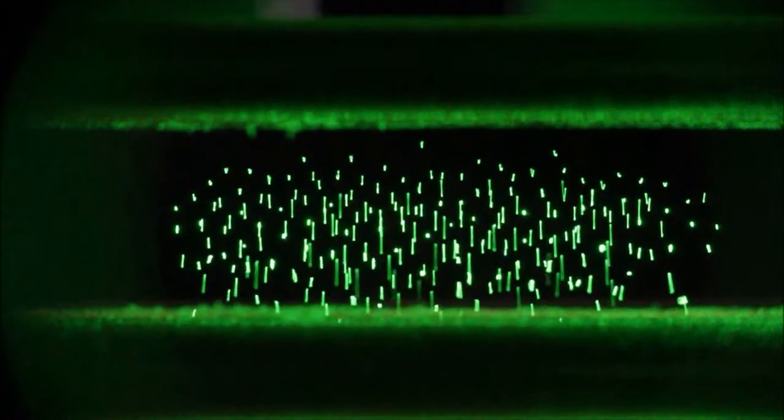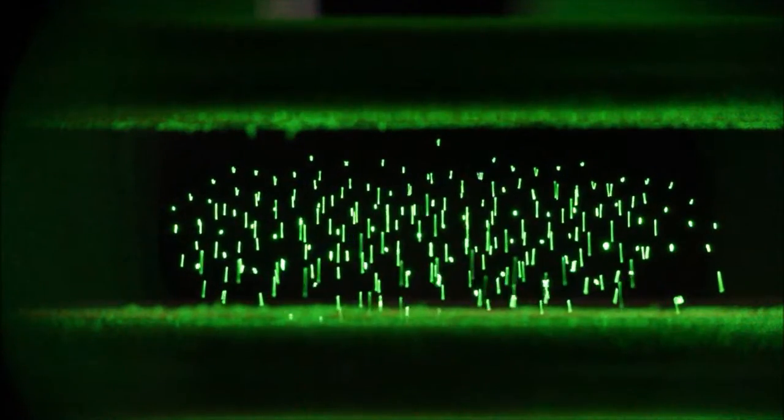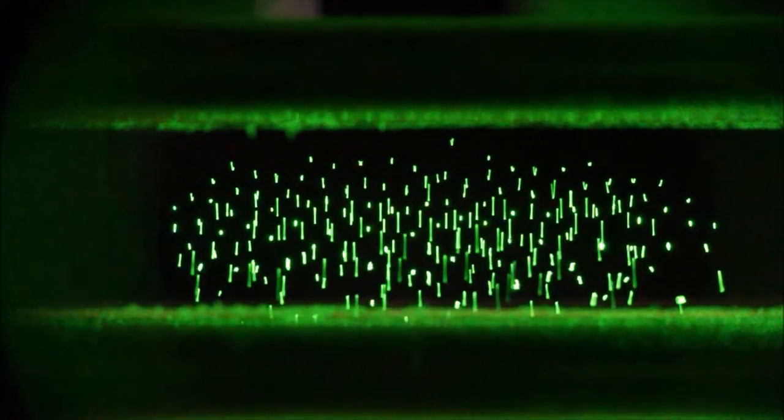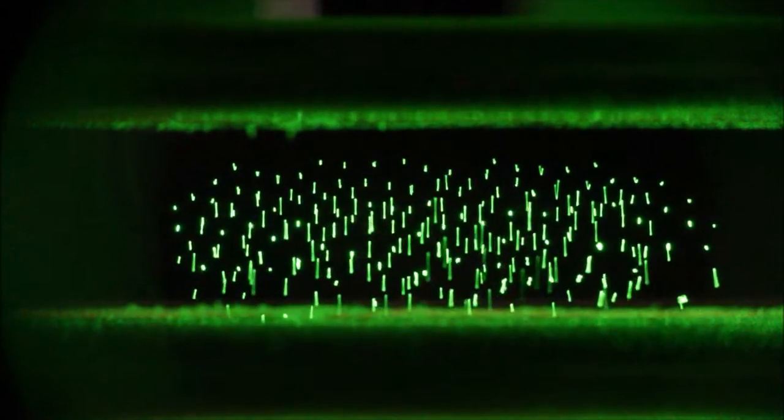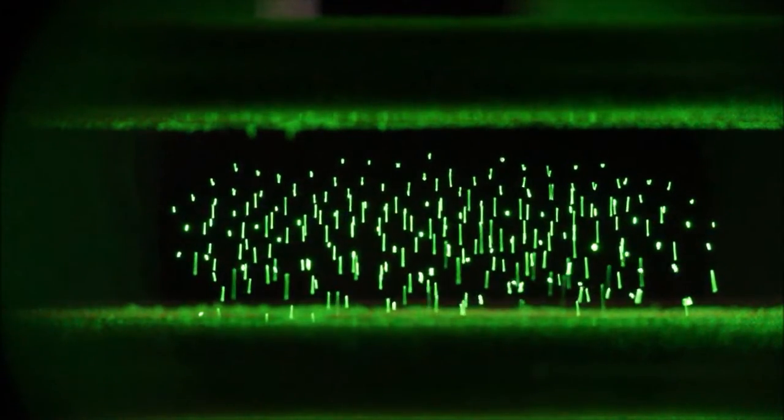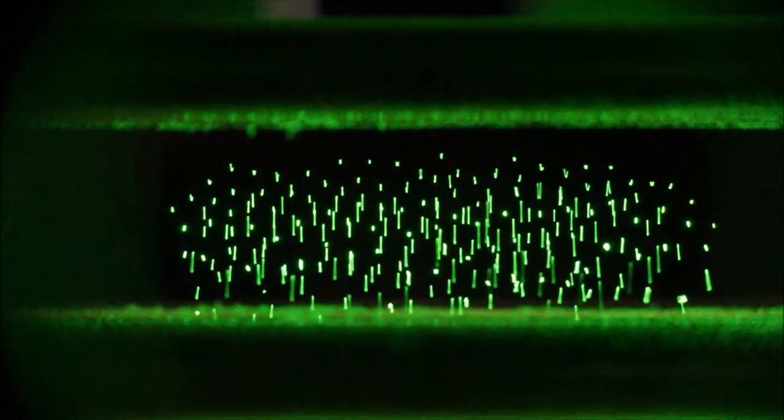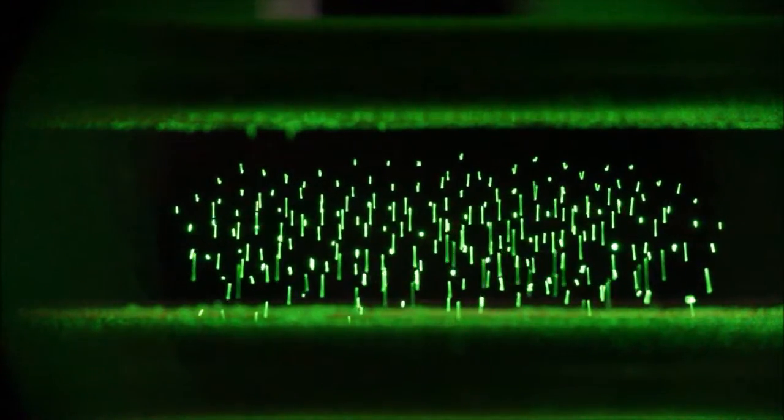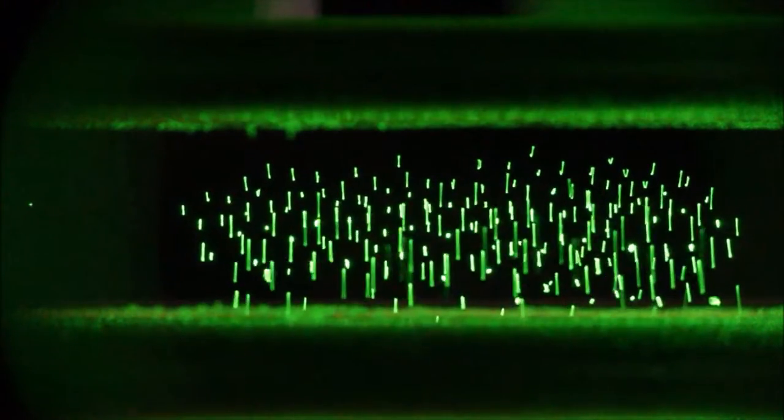Okay, so they repel each other, and so they don't fall to the center of the trap—the center being a line in this case—but instead they're spread out. So they're being pushed toward the center, toward a line in the center by the trap, and then the mutual repulsion keeps them apart.